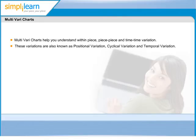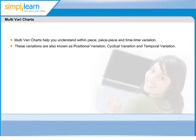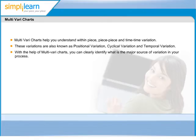These variations are also known as positional variation, cyclical variation, and temporal variation. With the help of multivari charts, you can clearly identify what is the major source of variation in your process.